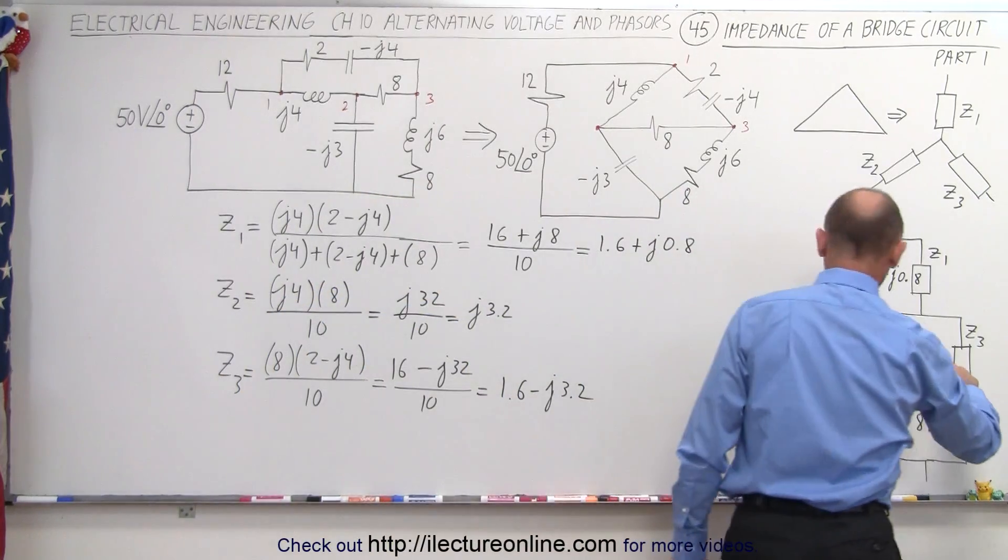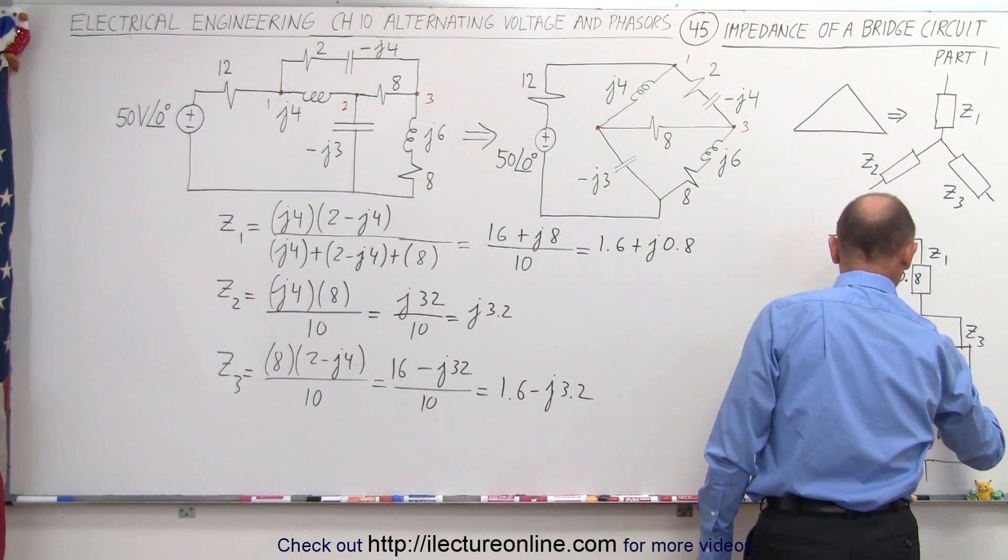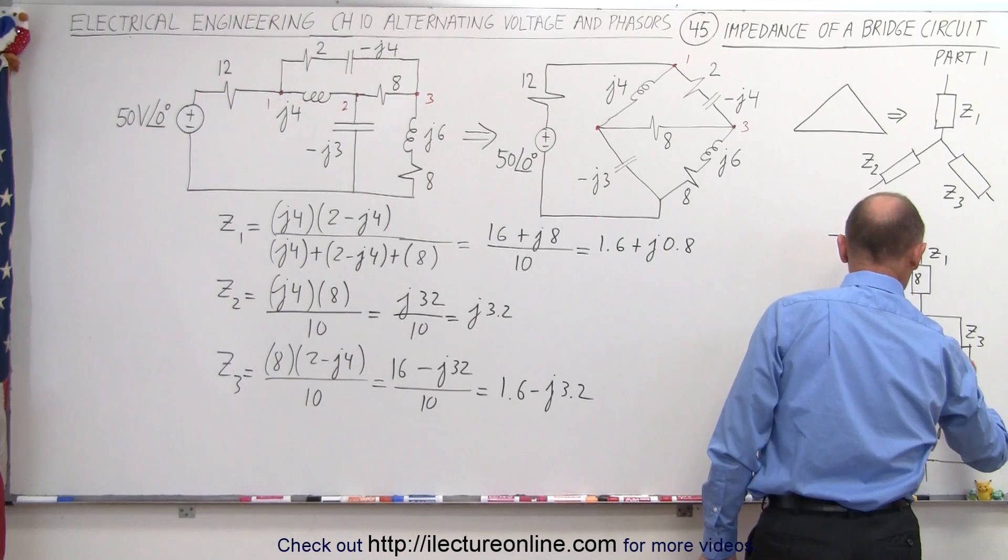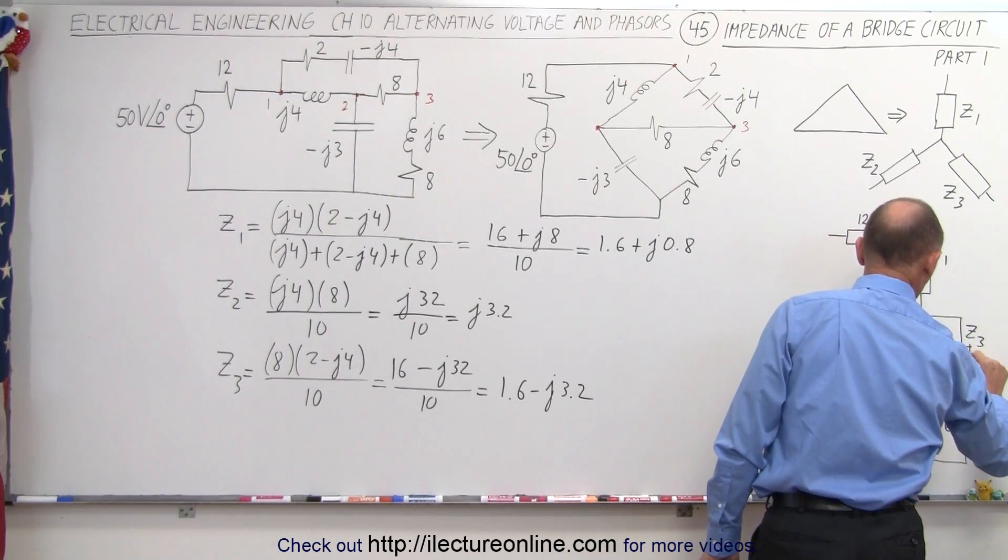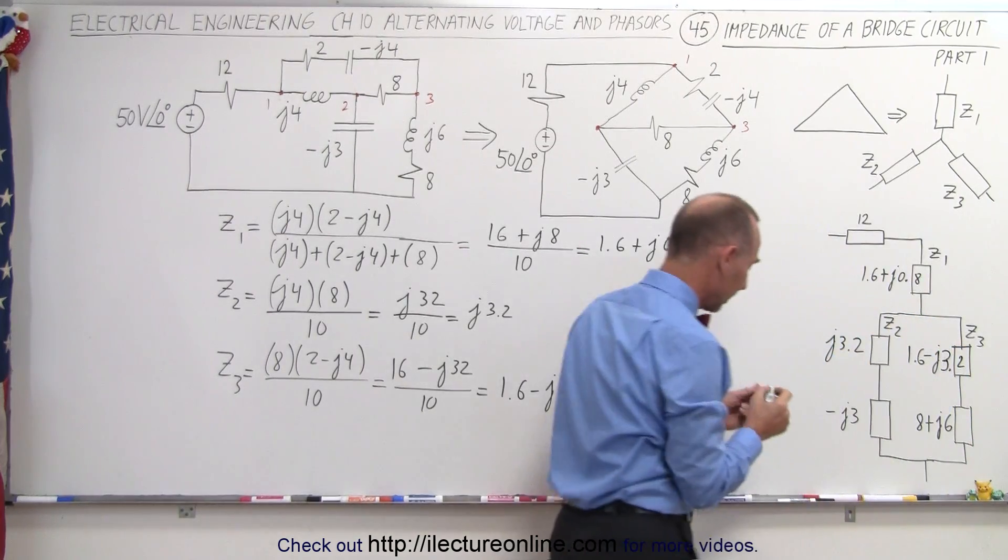Then we come over here, we plug that in here. So we have 1.6 minus J3.2. It's not a very good-looking 3 there. There we go. All right.